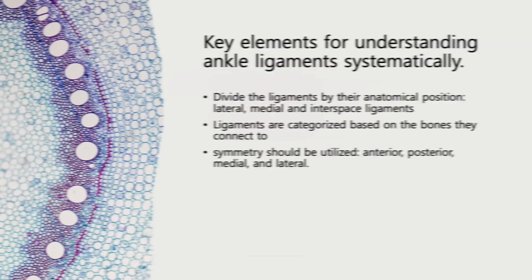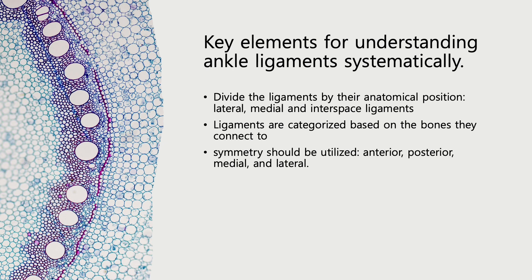Here are key elements for understanding ankle ligaments more systematically. Our bodies typically exhibit symmetrical features, which aid in organizing and remembering ligament systems. Here are some practical tips to systematize the study of ankle ligaments. First, divide the ligaments by their anatomical position: lateral, medial, and interspace ligaments.